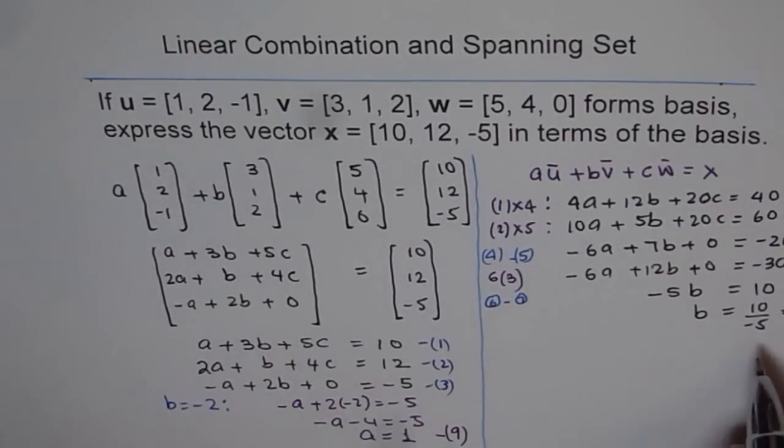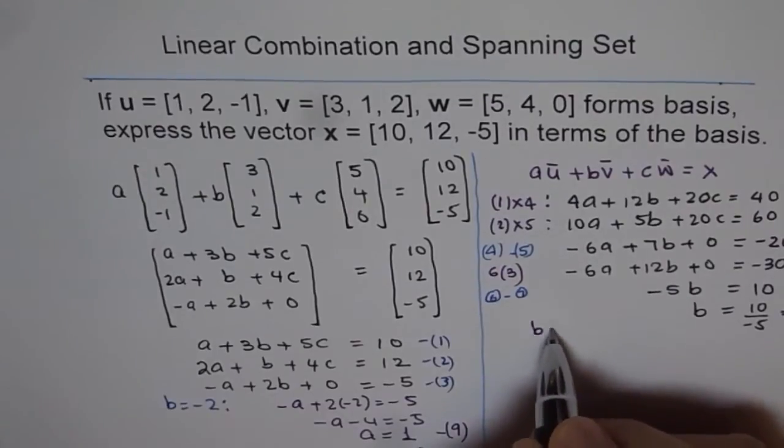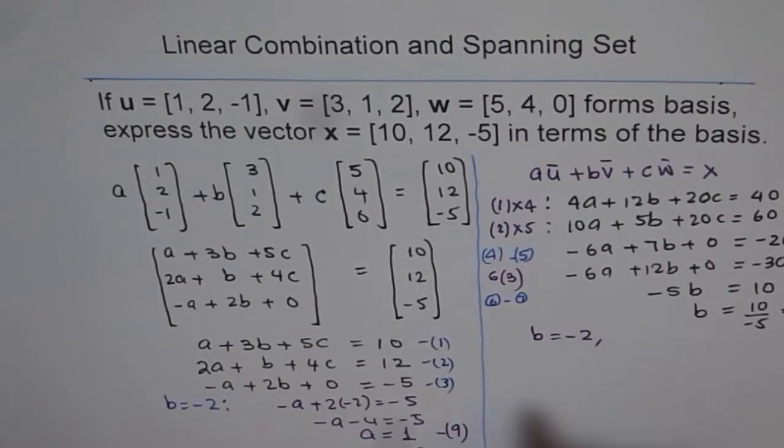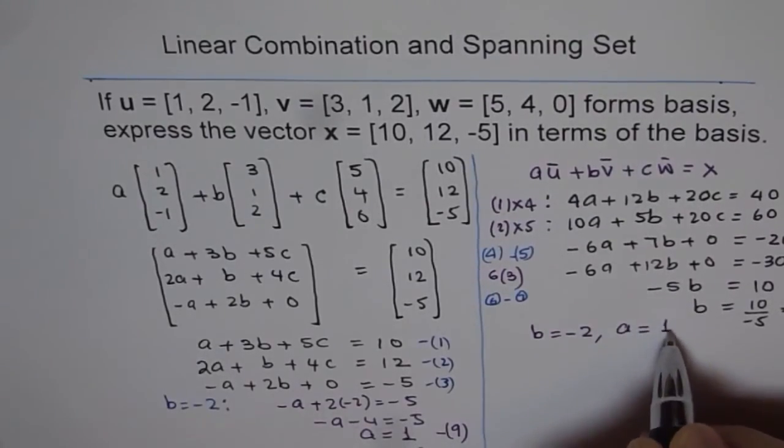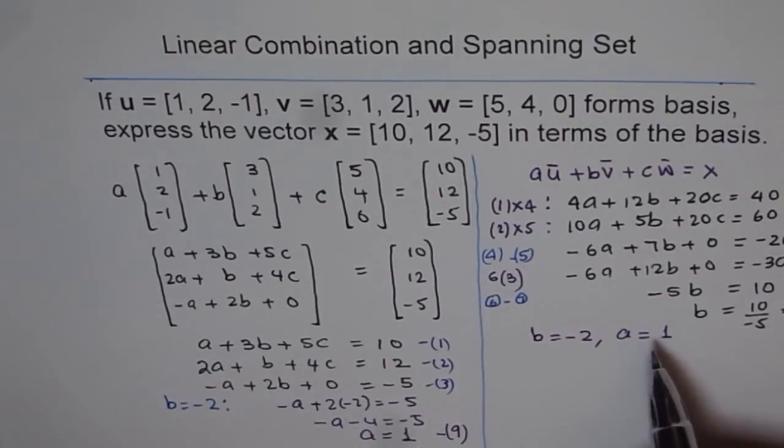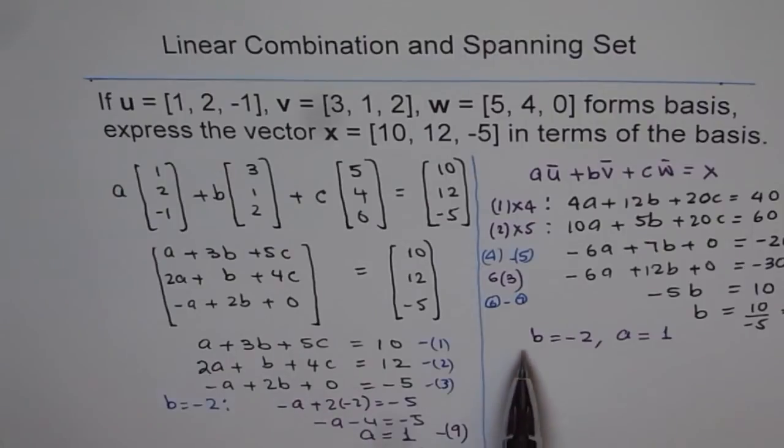So what I have found so far is that B is equals to minus 2, and A is equals to 1. Now to find C, I can use my original equation, and from that equation I can find C.